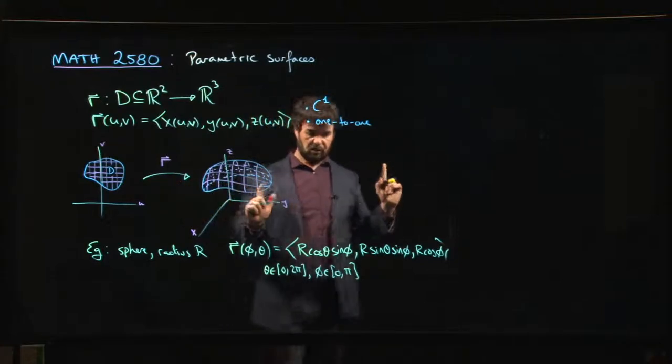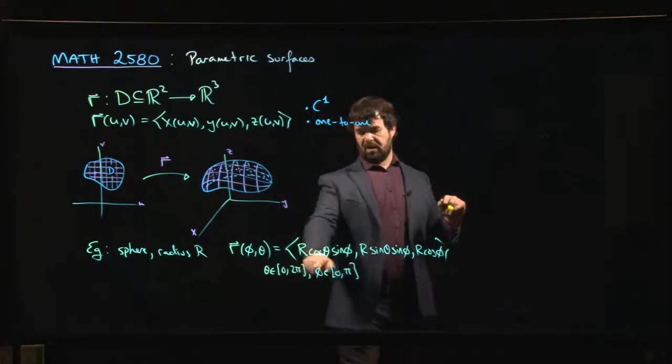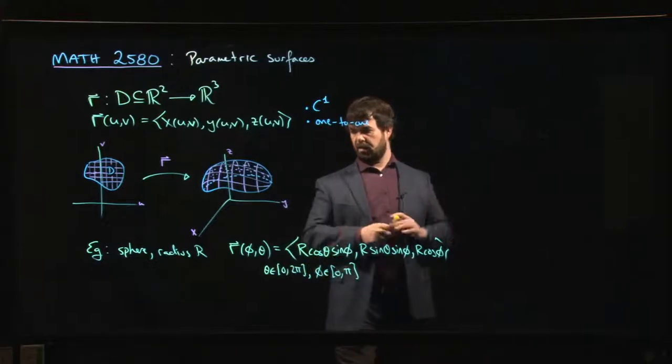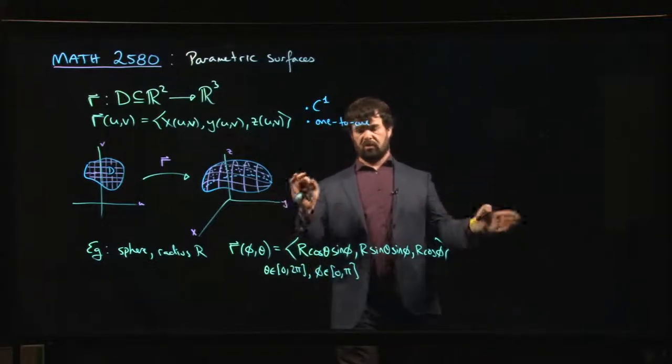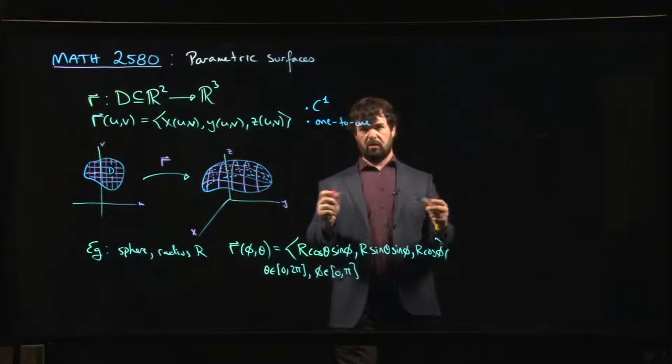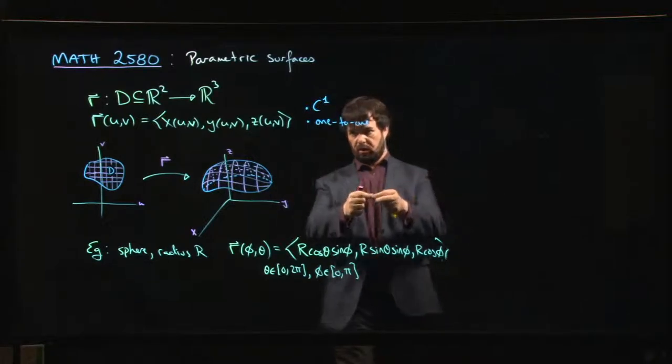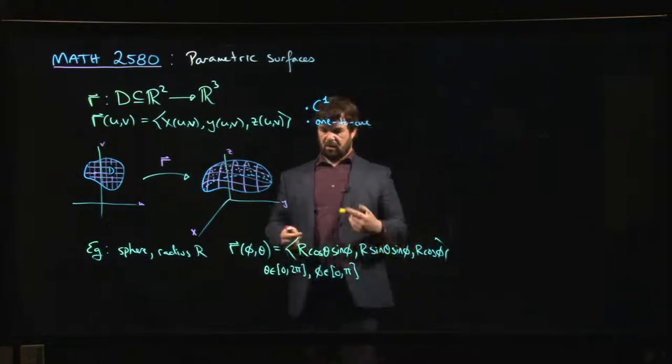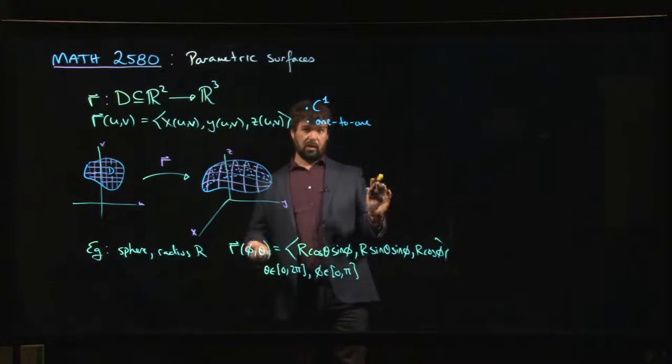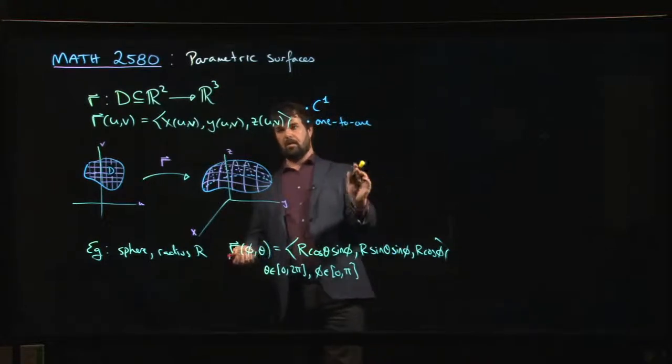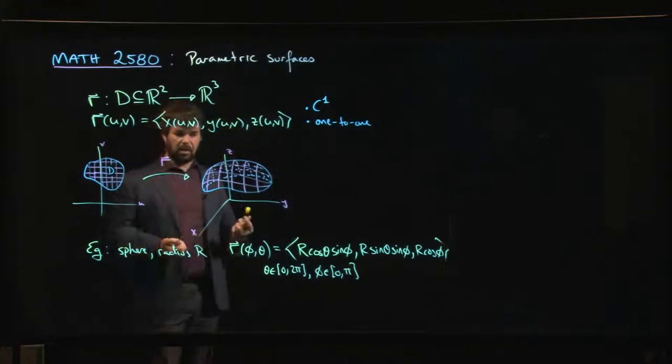One of the things you might want to do is think about what is actually happening to that rectangle. I'll leave this as a visualization exercise for you. Draw that rectangle in the φθ plane. Some edges are going to get joined, some edges are going to get shrunk down to a point. Try to visualize what's going on with that mapping.